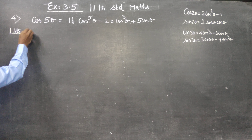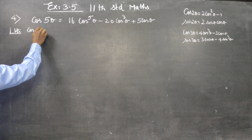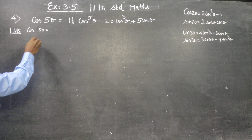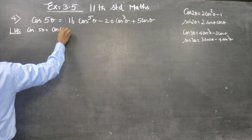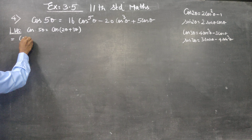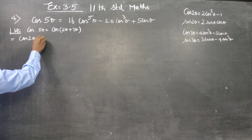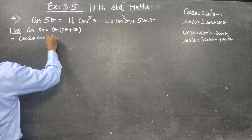My LHS is cos5θ. This can be written as cos(2θ + 3θ). Now, what is the compound angle formula? cos(A+B) = cosA·cosB - sinA·sinB. This is your compound angle formula.